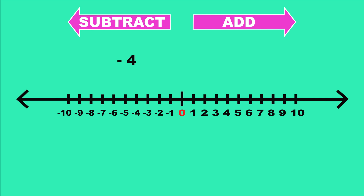Let's say I owe $4 and then I get paid $12 from my job. What do I have then? That's negative 4 plus 12. On the number line, start at negative 4 and move to the right 12 places. The answer is 8 — I now have $8.